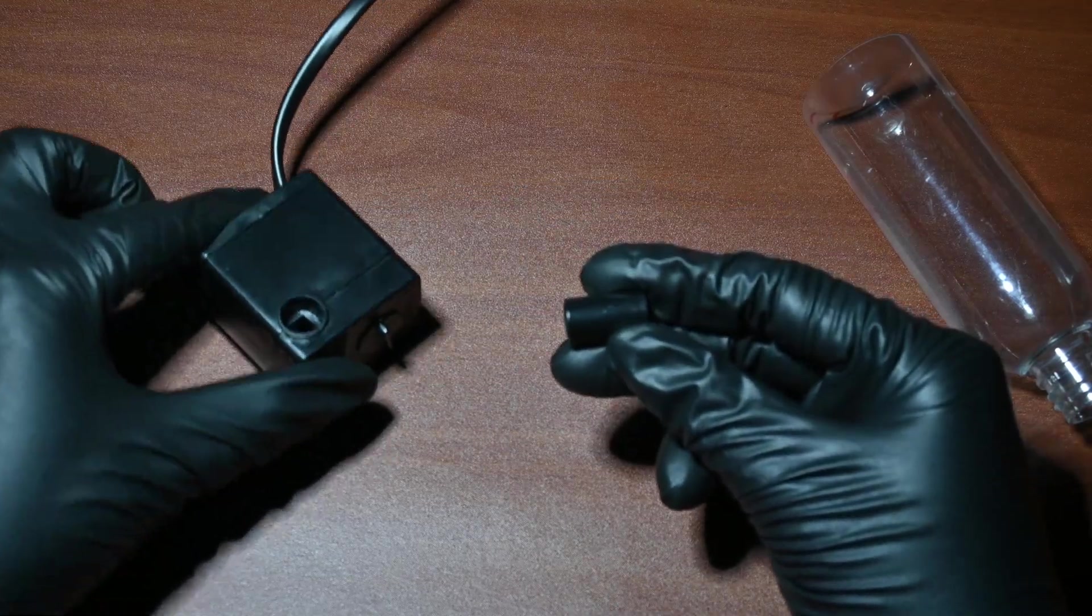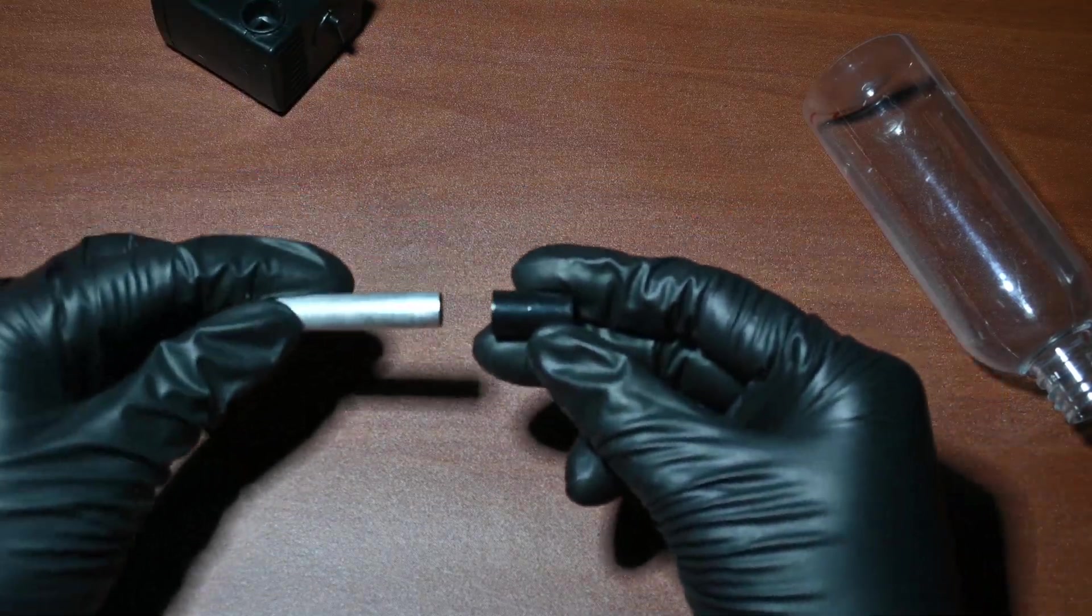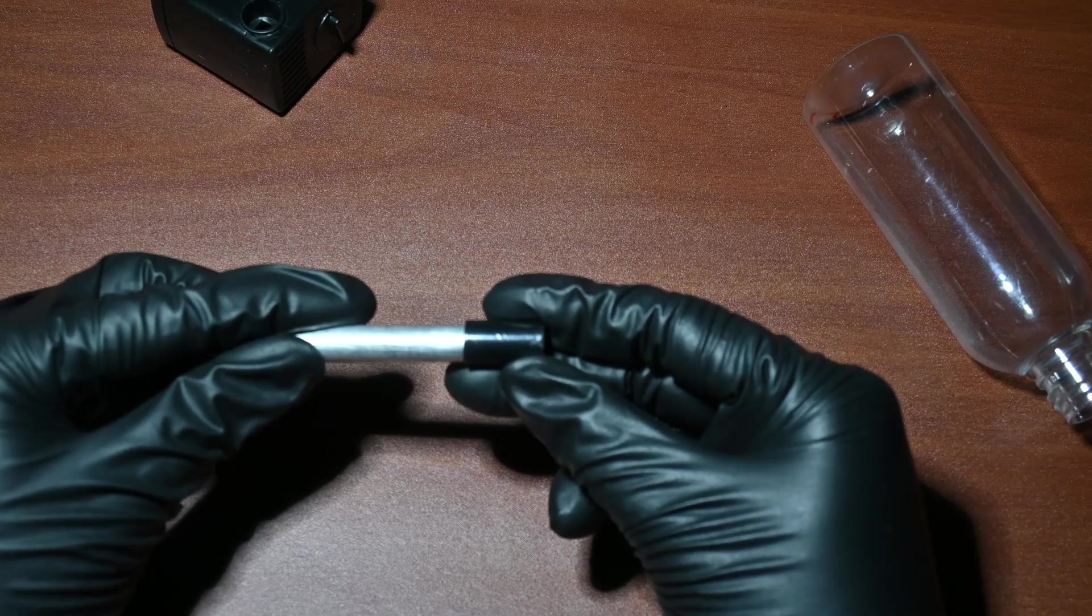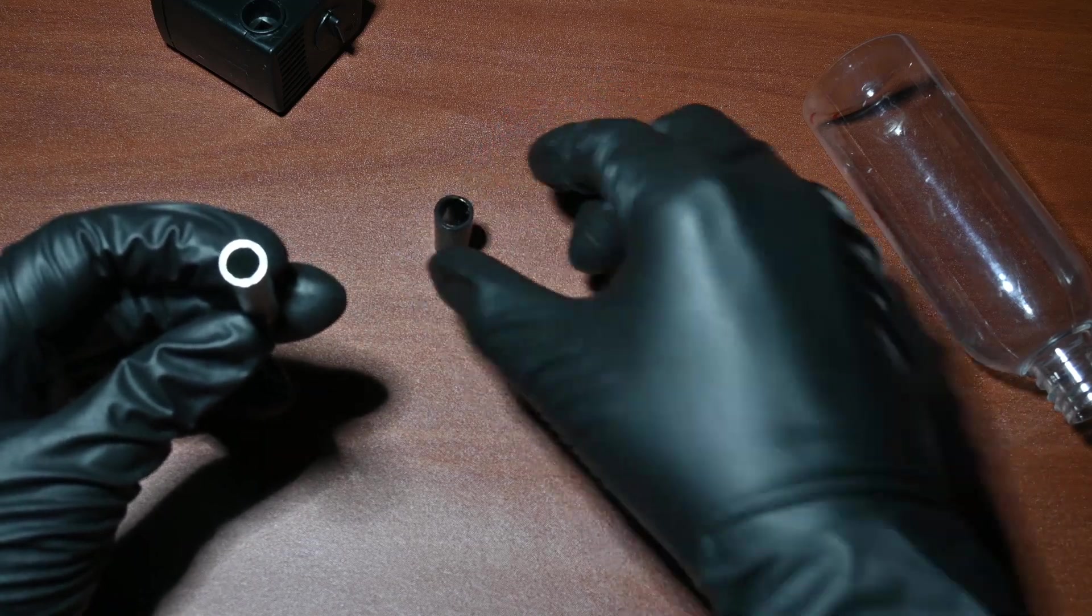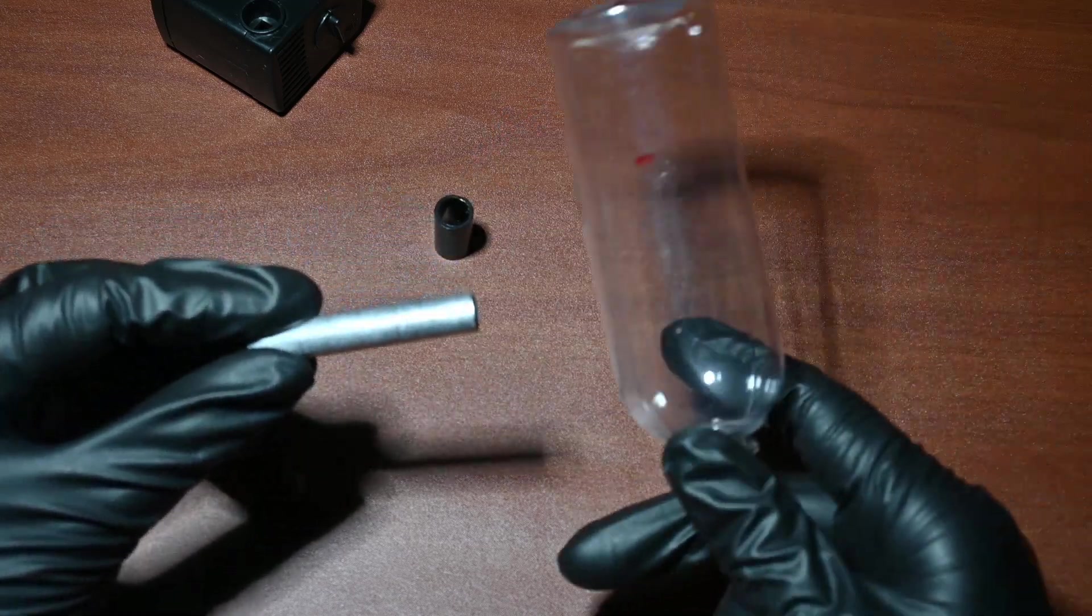The easiest way to create the hole is by using a metal tube that matches the pump's output size. Heat up the metal tube, then use it to melt a precise hole in the bottle.